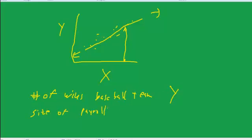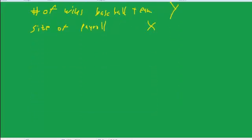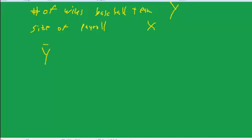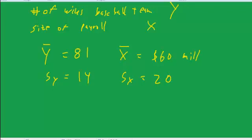and that would be our x variable. So suppose that y bar is equal to 81, that's the average number of wins, x bar is equal to, I'll make up a number, 60 million dollars. Let's let Sy equal to 14, Sx equal to 20,